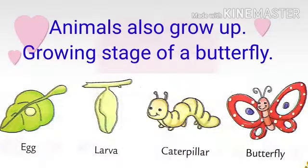Do you know, students, just like human beings, animals also grow up. Now let us discuss about the growing stages of a butterfly. Firstly, there is an egg of a butterfly that converts into a larva. And after growing up, it becomes a caterpillar. And in its final stage, it becomes a butterfly.